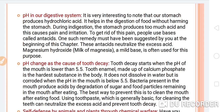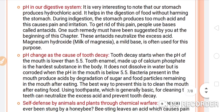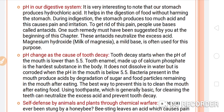pH in our digestive system: our stomach produces hydrochloric acid with a pH of approximately 1.2, which helps in digestion without harming the stomach. During indigestion, the stomach produces too much acid, causing pain and irritation known as acidity. To get relief, people use bases called antacids, such as milk of magnesia (magnesium hydroxide) and sodium bicarbonate. These antacids neutralize the excess acid.